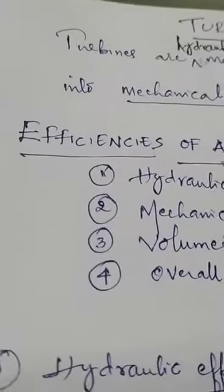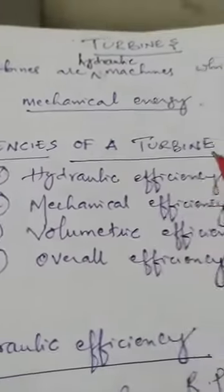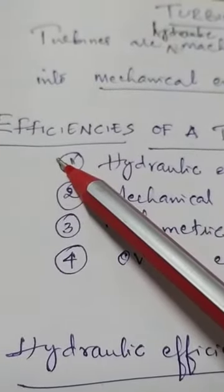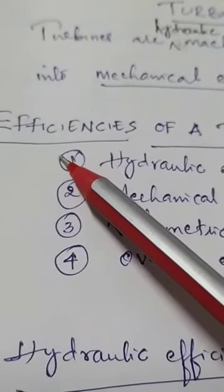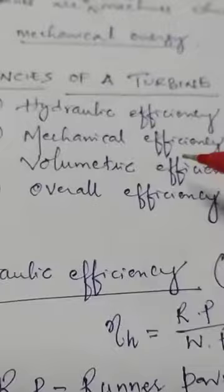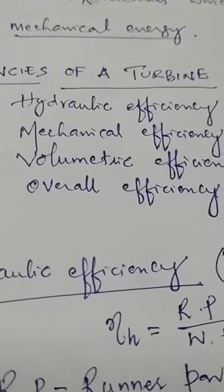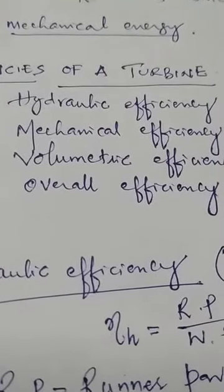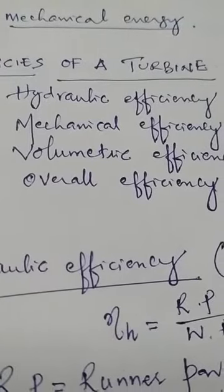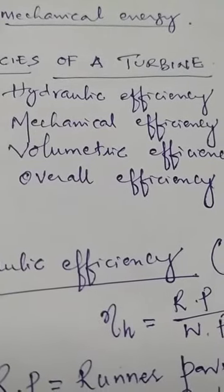I will directly go to an important discussion: the efficiencies of a turbine. This is important because whatever hydroelectric power is generated mainly depends upon the efficiency of a turbine. Before going to the discussion of all these efficiencies, I will explain exactly what efficiency is — you already studied this in the previous chapter. Efficiency equals output divided by input; it is the ratio of output to input.